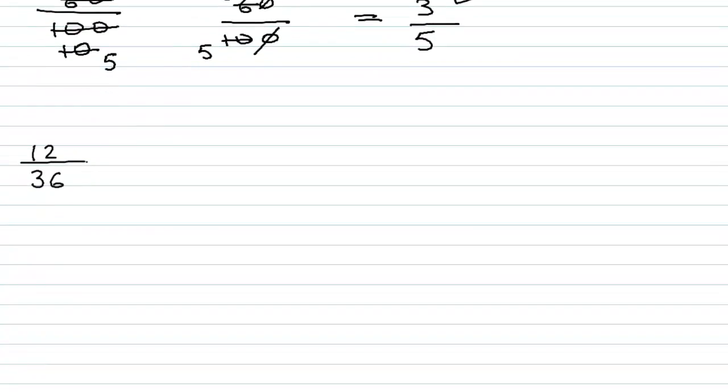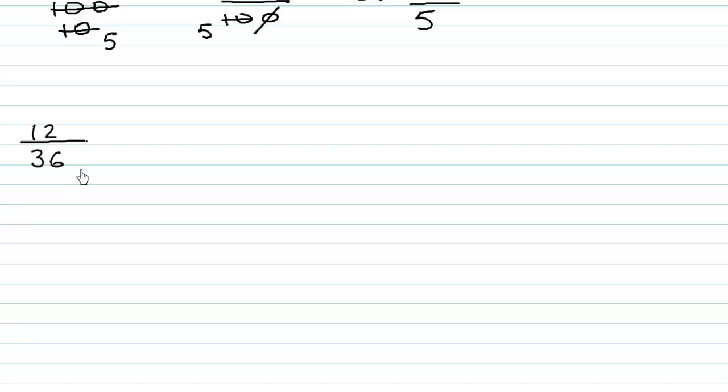Let's do another example: 12 over 36. Both go in the table of 2. 12 divided by 2 is 6, and 36 divided by 2 is 18. Both these numbers go in the table of 6, so we can divide directly by 6. It's not necessary to always divide by prime numbers. 6 divided by 6 is 1, and 18 divided by 6 is 3.